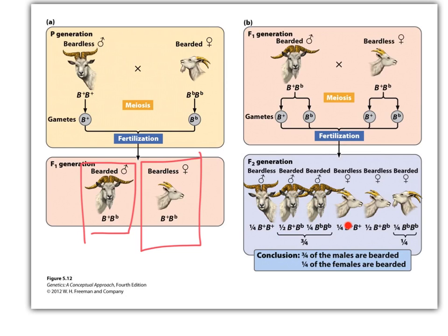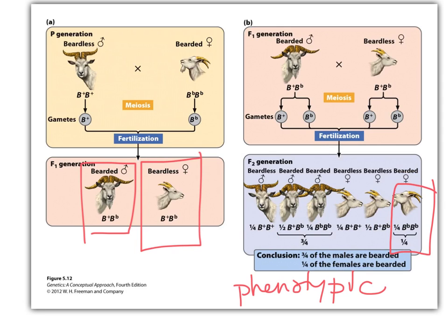In the females: homozygous wild type — no beard; heterozygous — no beard. The only time we see a beard is when it's homozygous recessive, or homozygous for the bearded mutant. So as you can see, that skews the phenotypic ratios — not the genotypes. Genotypes stay exactly the same. Do the Punnett square and see what you would get for males and females, and determine that this is autosomal but sex-influenced.